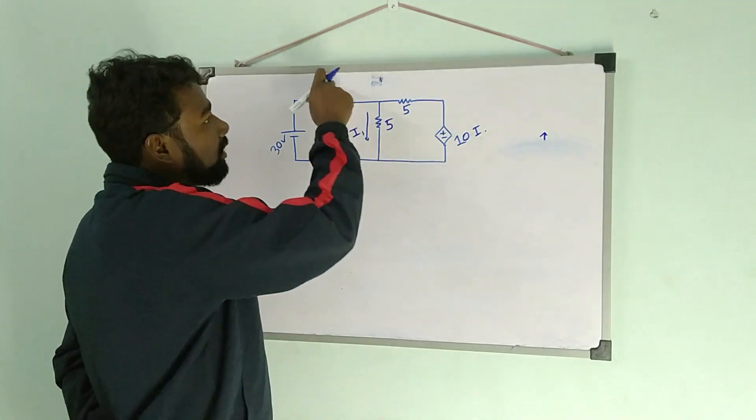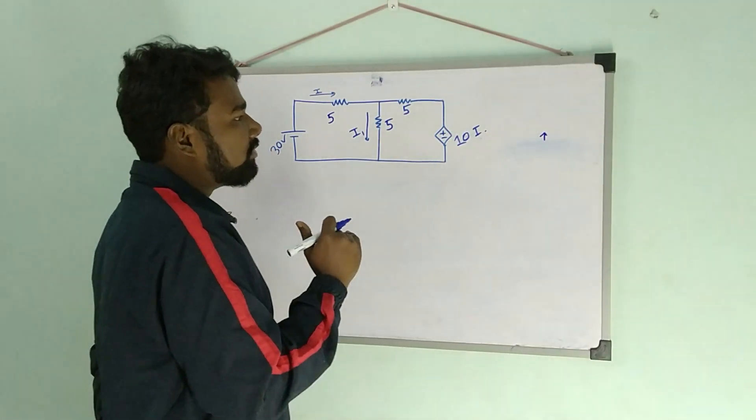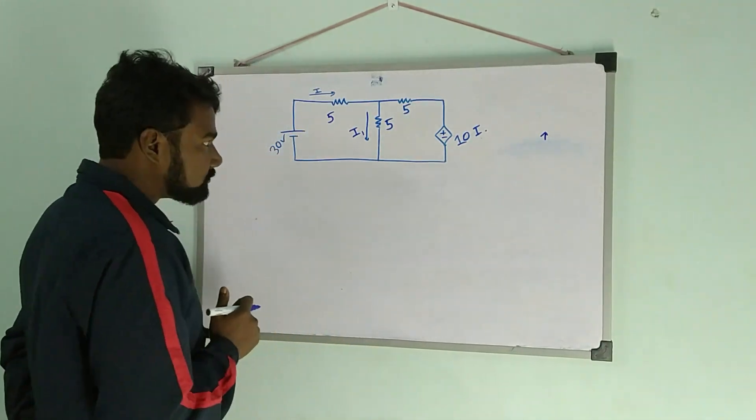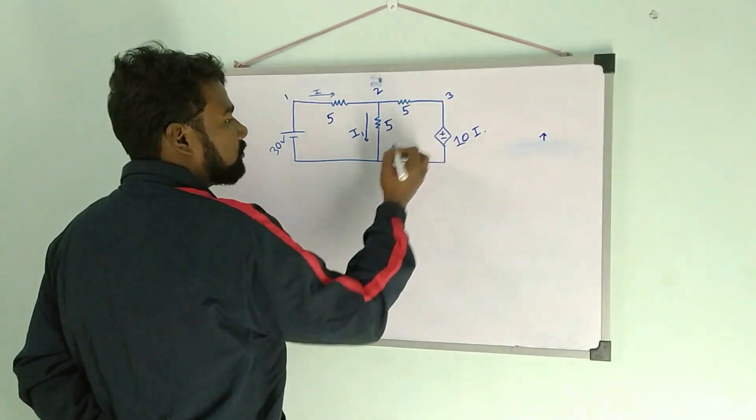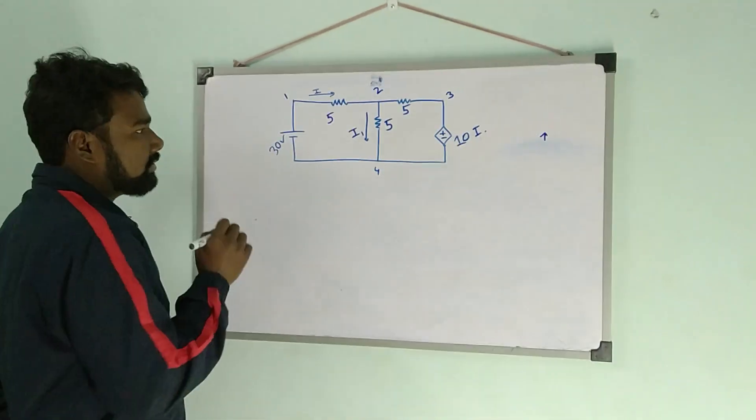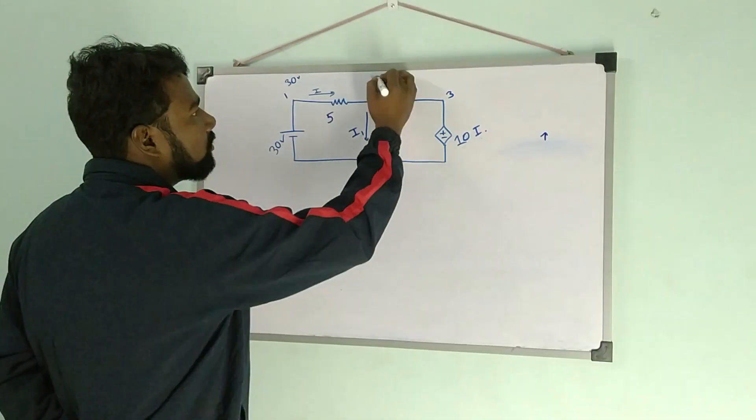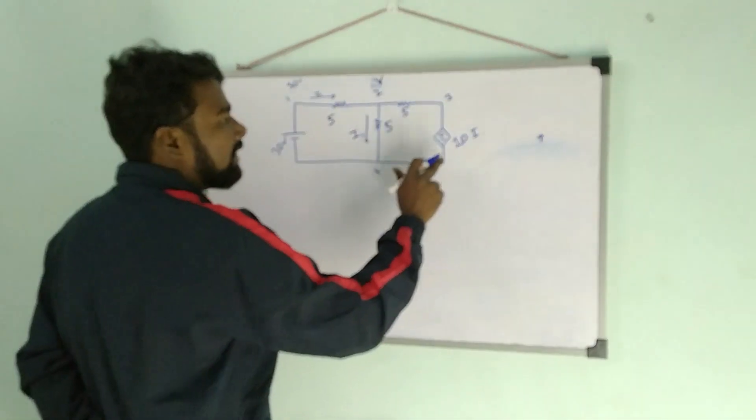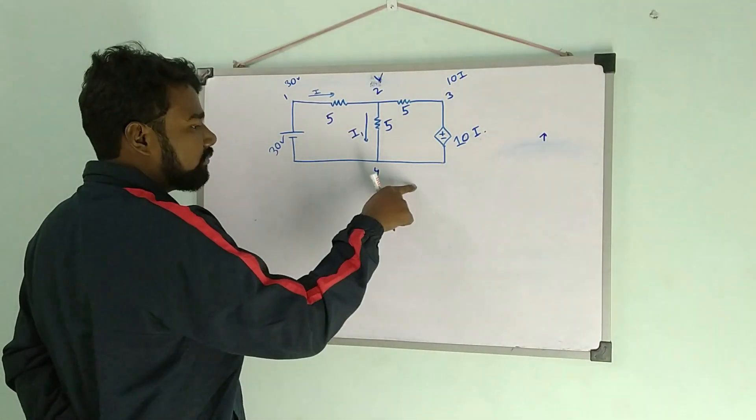Now coming to the problem. First, this is node 1, this is node 2, this is node 3, and this is node 4. The value of node 1 is 30 volt. The value of node 2 is v. The value of node 3 is 10i volt, and the value of node 4 is 0 volt.